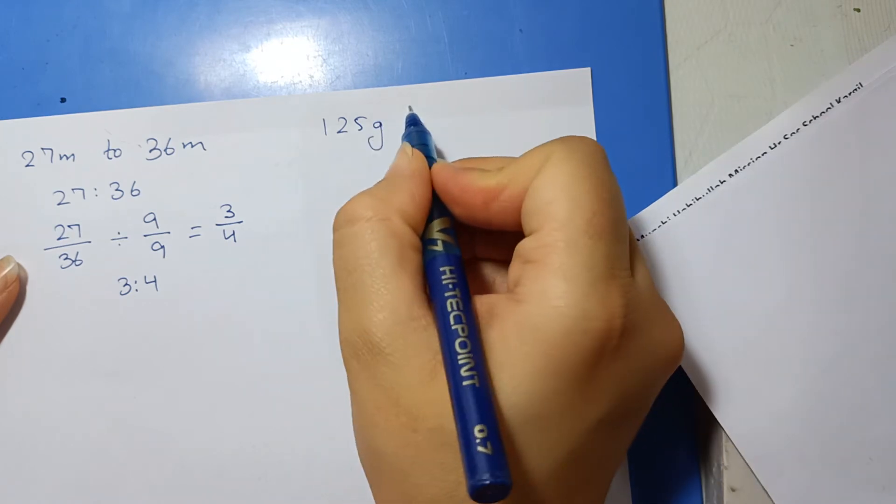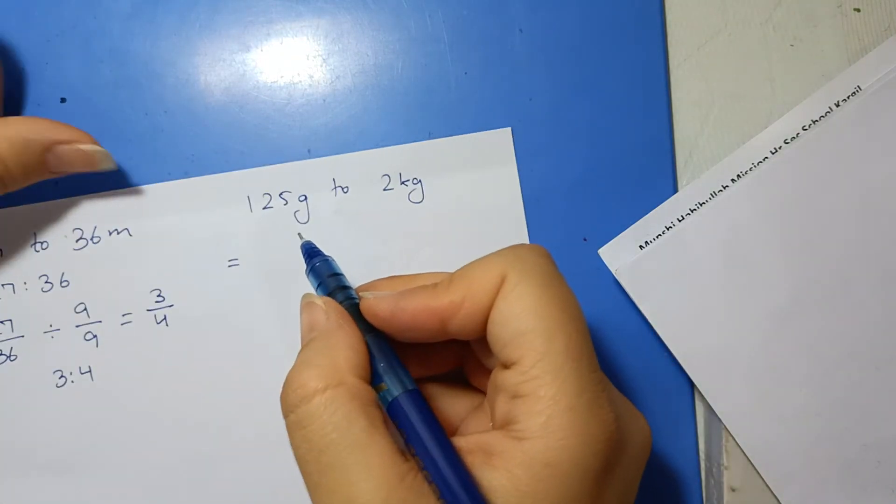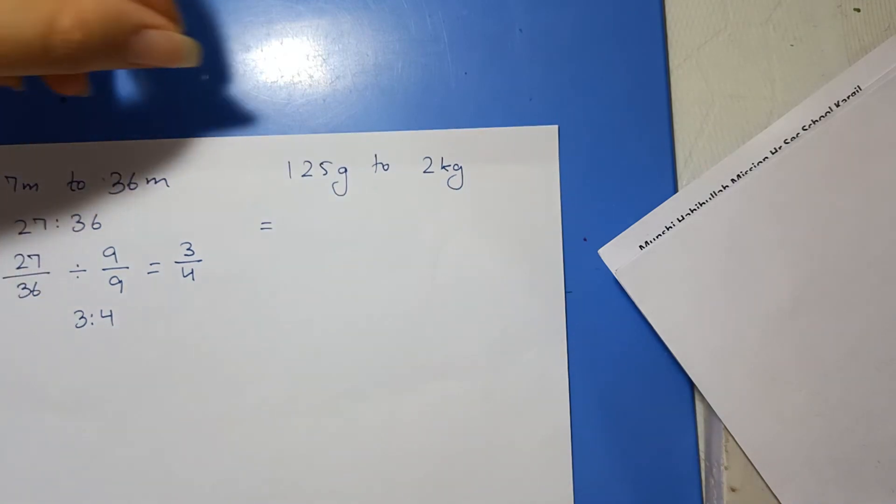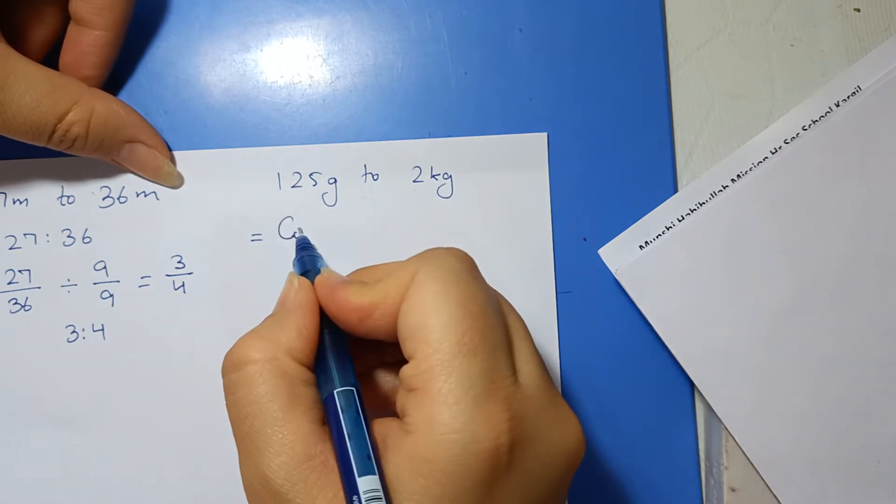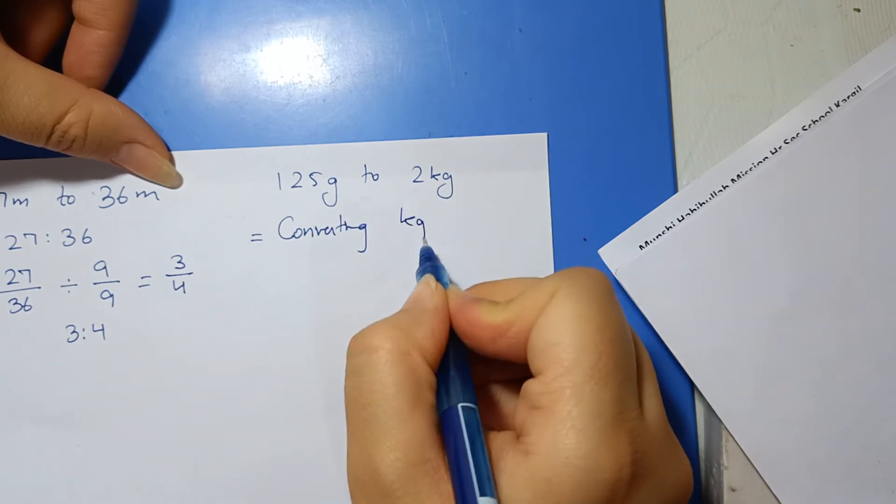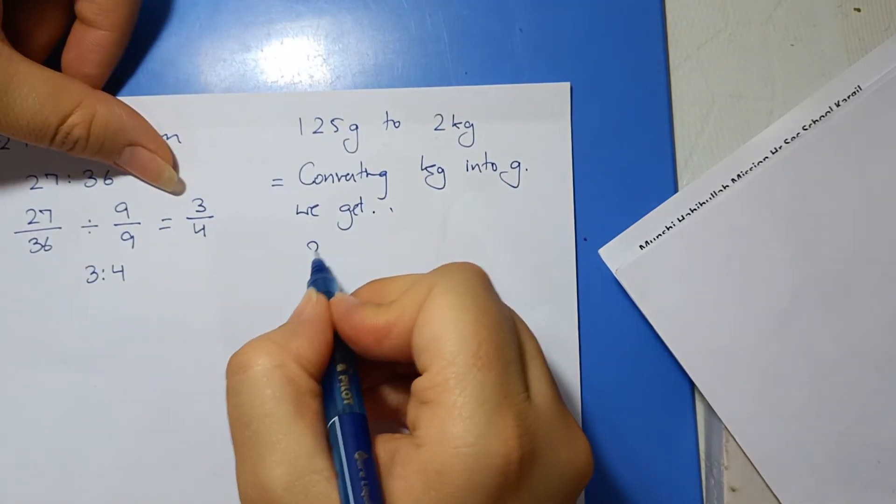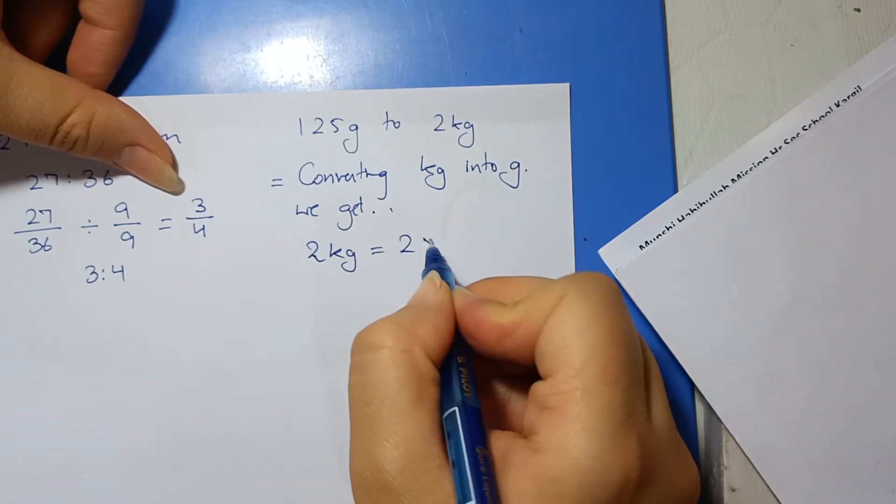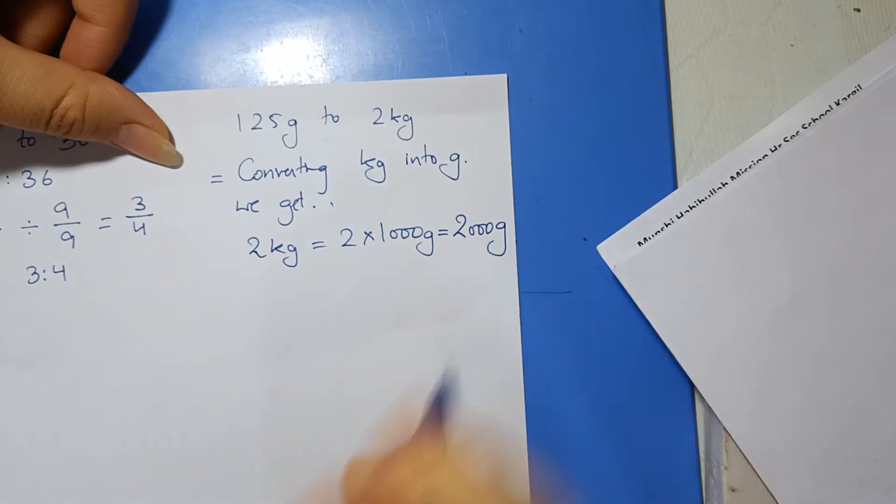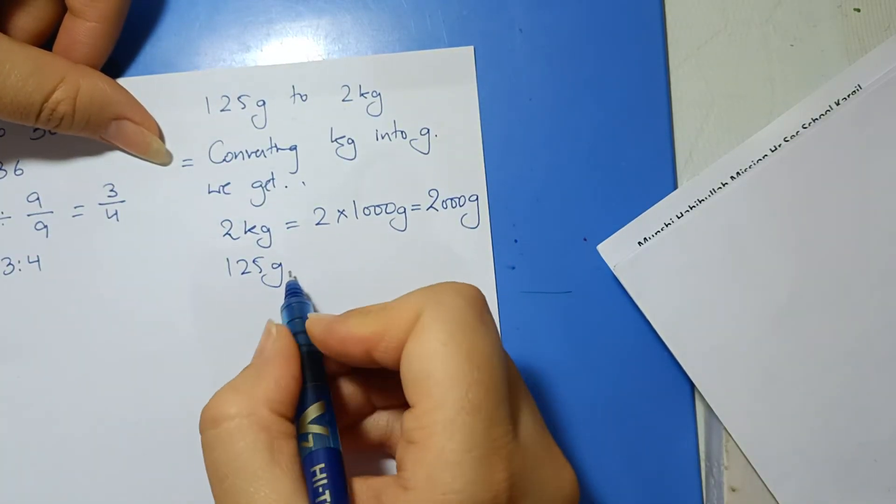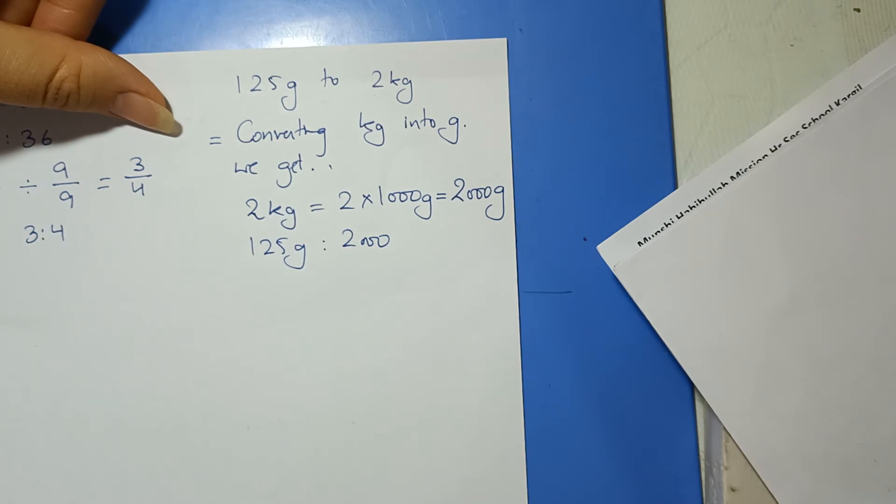Next example: 125 grams to 2 kg. Here you see grams and kg, there are two units. We will convert kg into grams. 2 kg equals to 2 into 1000 grams, which equals 2000 grams. So 125 grams is to 2000 grams.